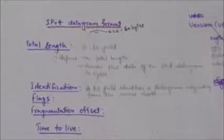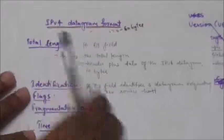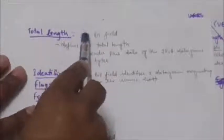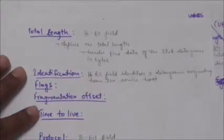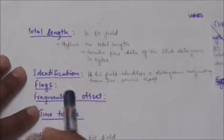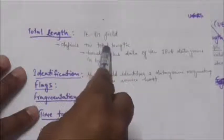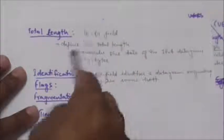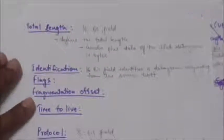The next field is Total Length — a 16-bit field that defines the total length in bytes of the IPv4 datagram, including both header and data.